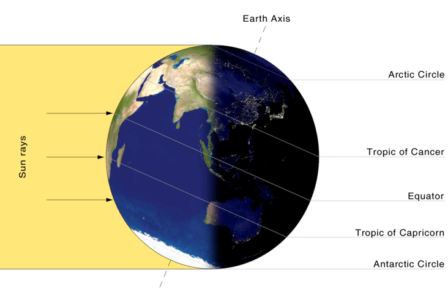Astronomical almanacs define the solstices as the moments when the sun passes through the solstitial colure, i.e., the times when the apparent geocentric longitude of the sun is equal to 90 degrees or 270 degrees. The dates of the solstice vary each year and may occur a day earlier or later depending on the time zone. The solstices always occur between June 20 and 22 and between December 20 and 23, with the 21st and 22nd being the most common dates.